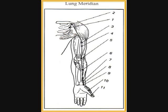Lung four indications: cough, fullness in the chest, pain in the medial aspect of the upper arm. Lung five indications: cough, spitting of blood, afternoon fever, asthma, sore throat, fullness in the chest, infantile convulsions, spasmodic pain of the elbow and arm, mastitis. Lung six indications: cough, pain in the chest, asthma, spitting of blood, sore throat, spasmodic pain of the elbow and arm.